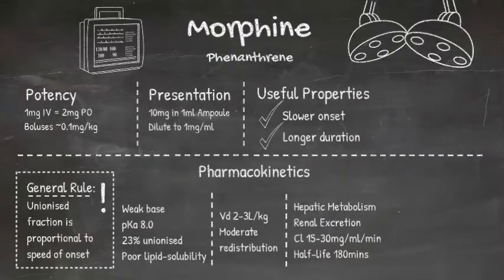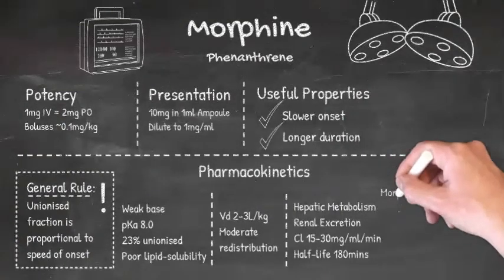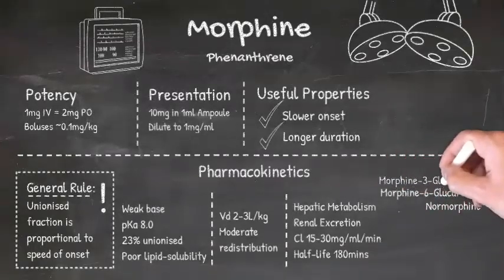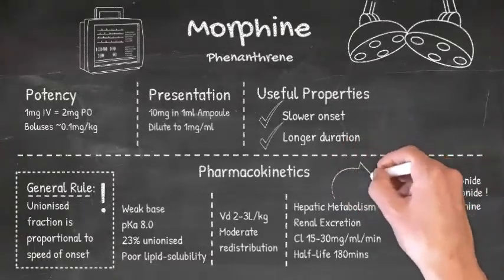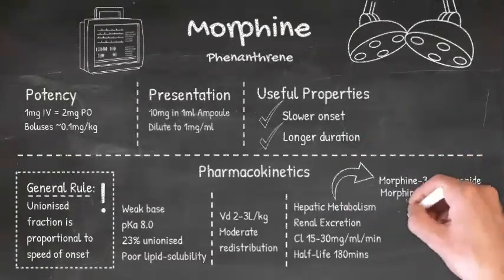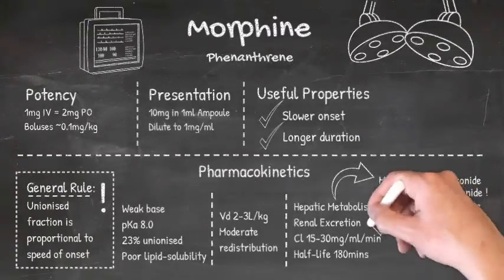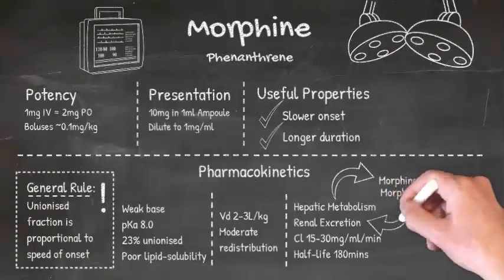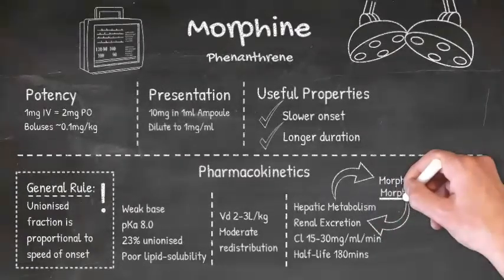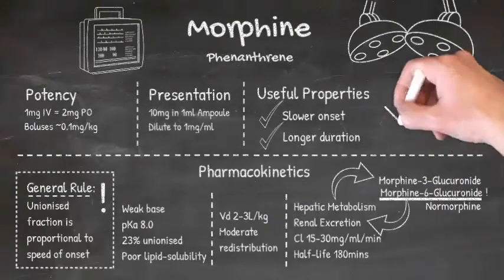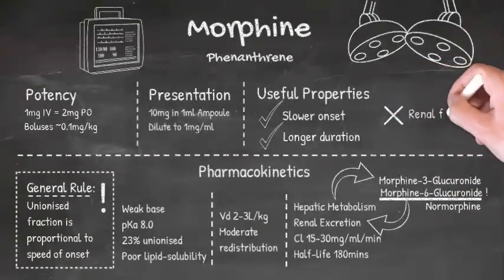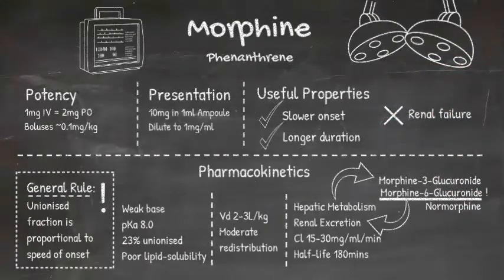Morphine is metabolised in the liver, partly by demethylation to normorphine, and partly by conjugation to morphine-3 and morphine-6-glucuronides. Importantly, the metabolite morphine-6-glucuronide is active and is actually more potent than morphine itself. This poses a problem in renal failure, because these conjugates accumulate rather than being quickly excreted as they should be.